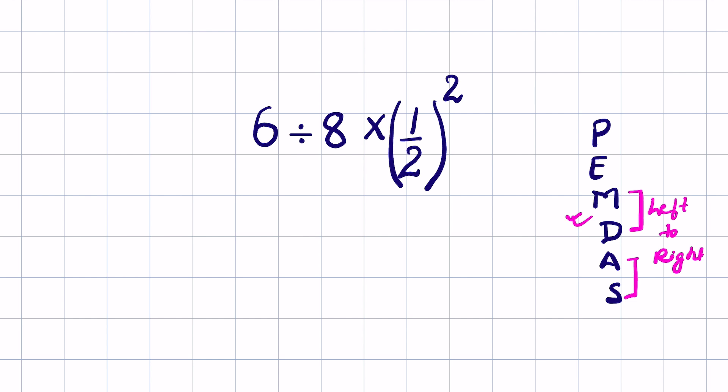You won't get the correct answer if you don't follow this left to right rule. Now in this question we have an exponent. Since before multiplication and division we need to solve the exponent, let's do the exponent first.